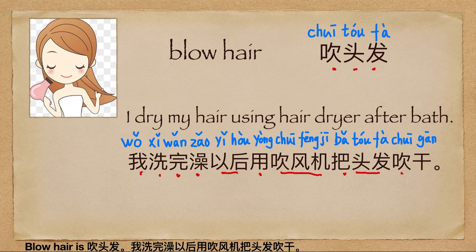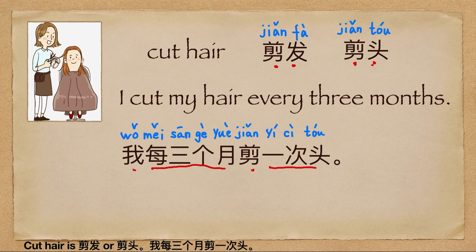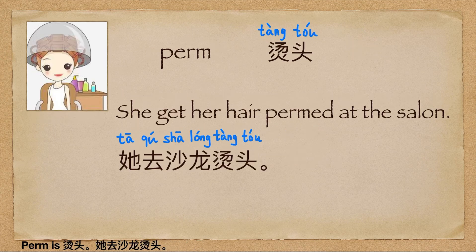我洗完澡以后，用吹风机把头发吹干。(After I shower, I use a hair dryer to dry my hair.) Cut hair is 剪发 (jiǎn fà), or 剪头 (jiǎn tóu). 我每三个月剪一次头。(I cut my hair once every three months.) 她去沙龙剪头。(She goes to the salon to get a haircut.)